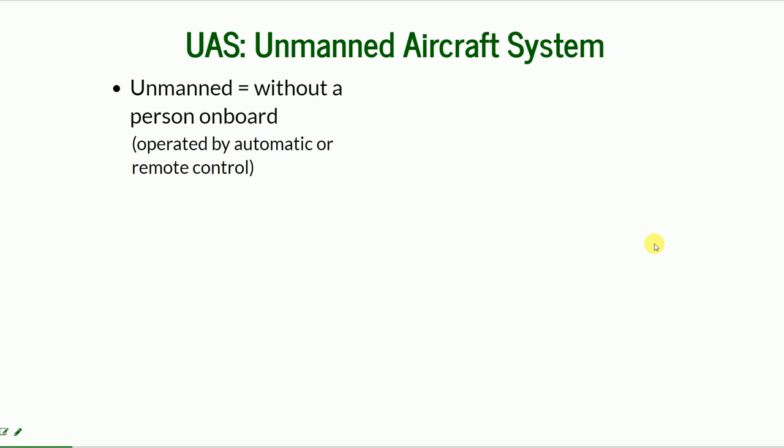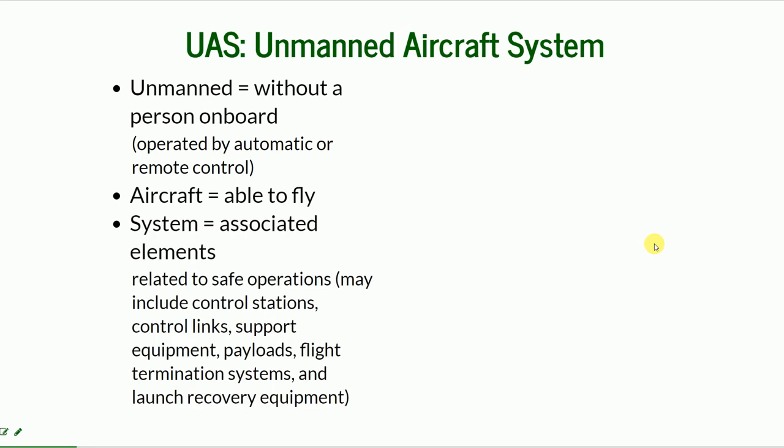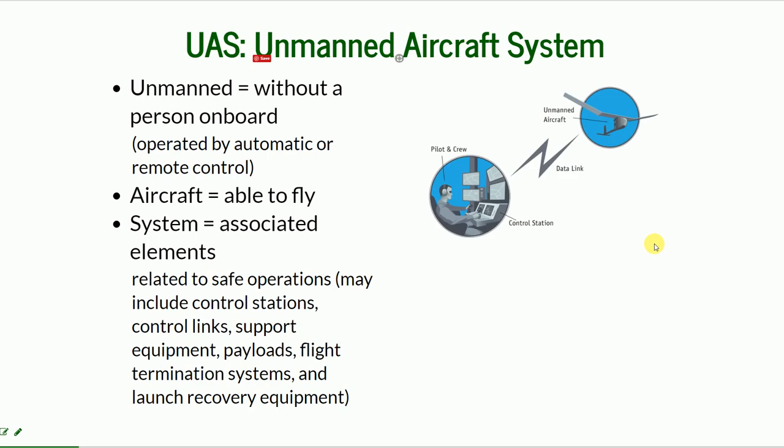What is the whole UAS — the whole system? It means unmanned, so there is no person on board the aircraft. It does not mean it flies by itself — it is operated by automatic or remote control. It is an aircraft, so it flies and is in the air. And it is a system, meaning it consists of many elements.